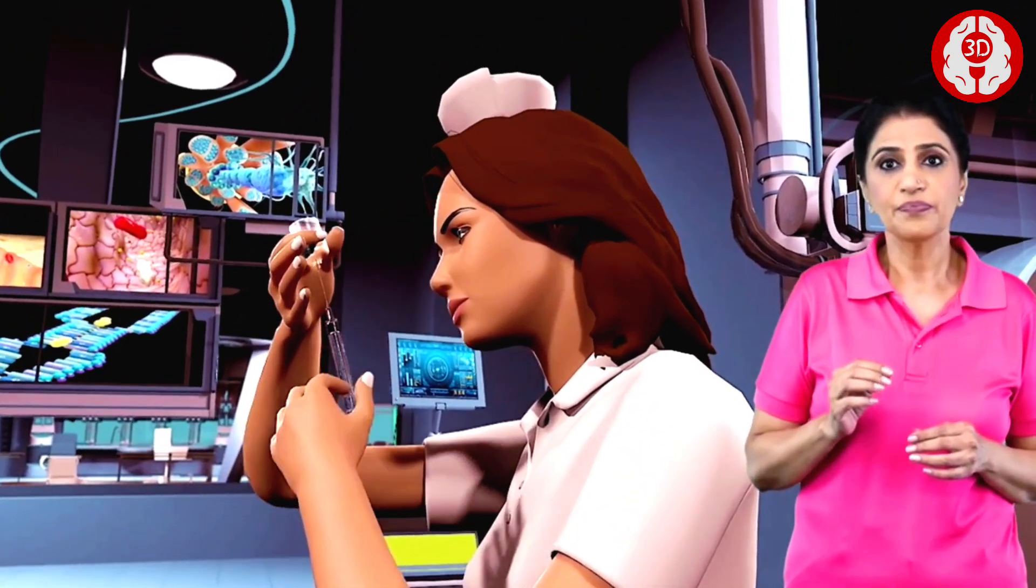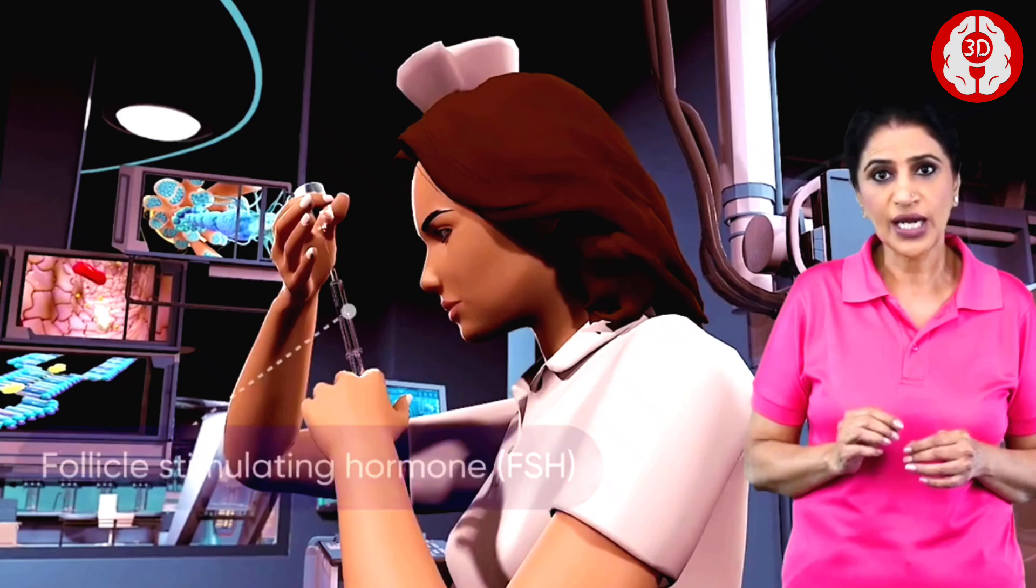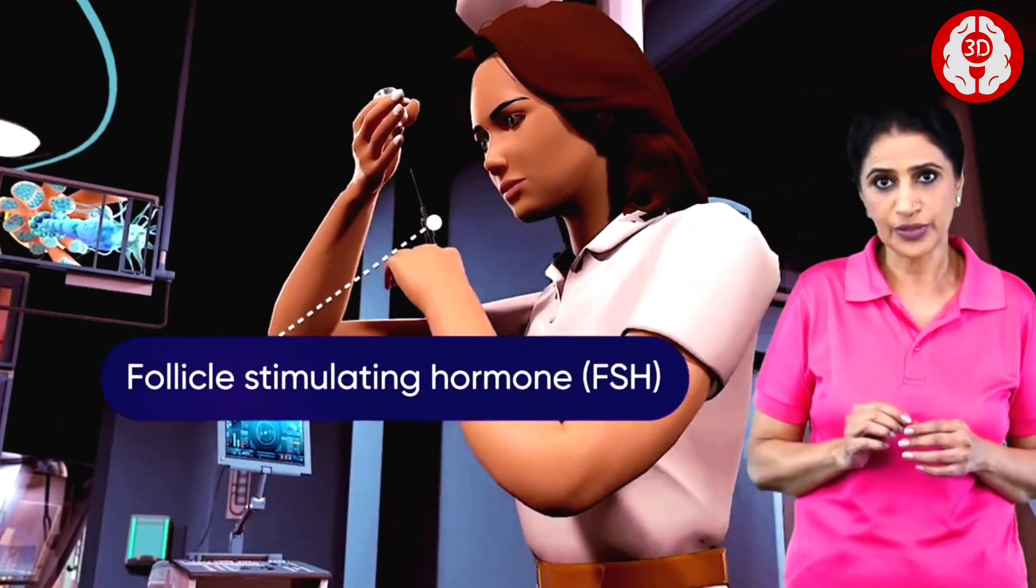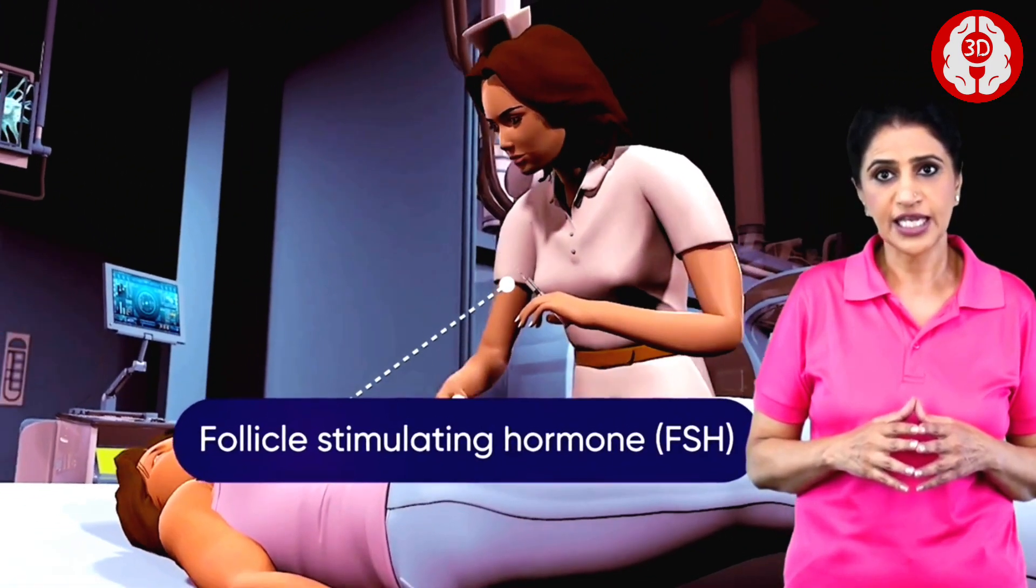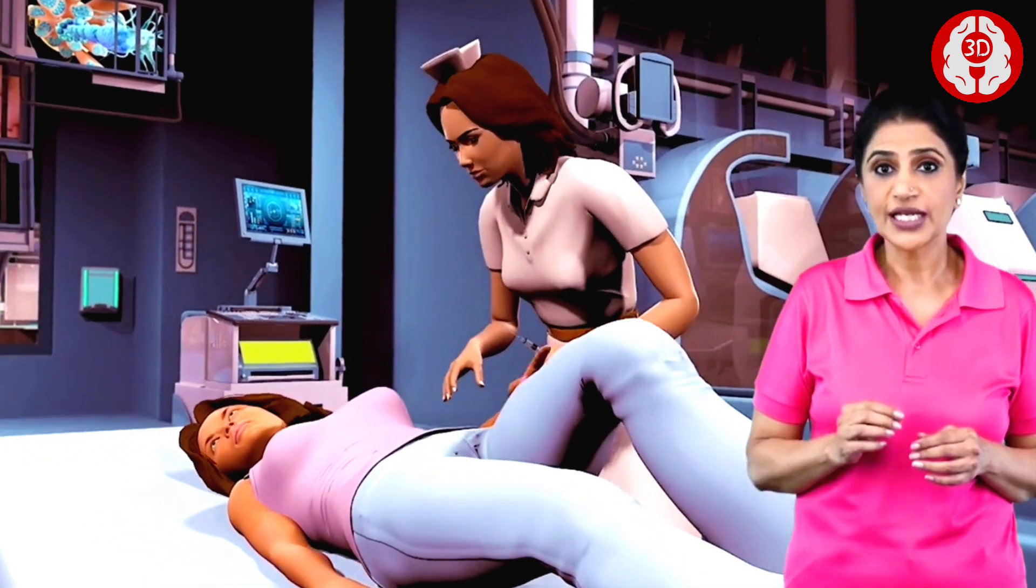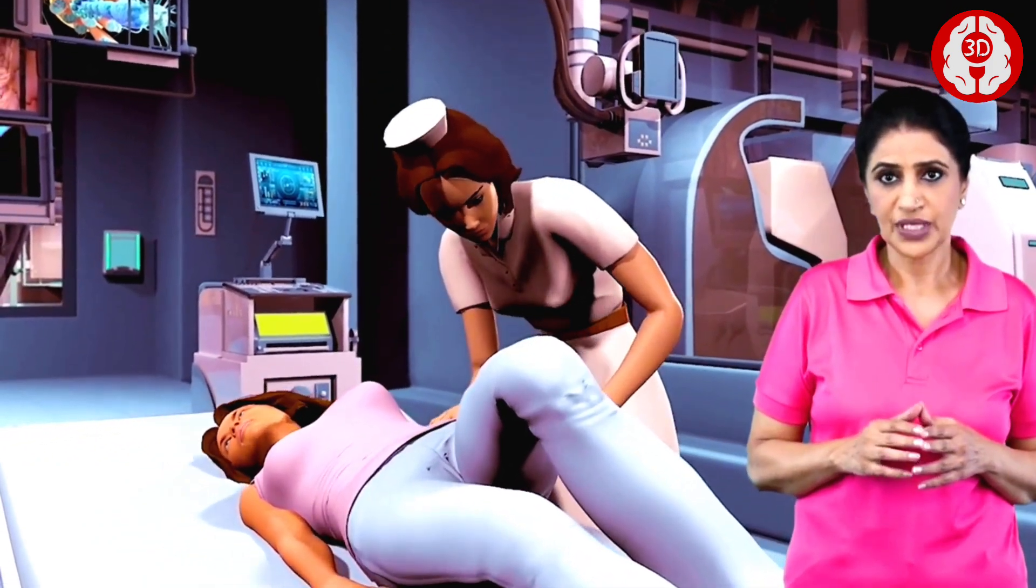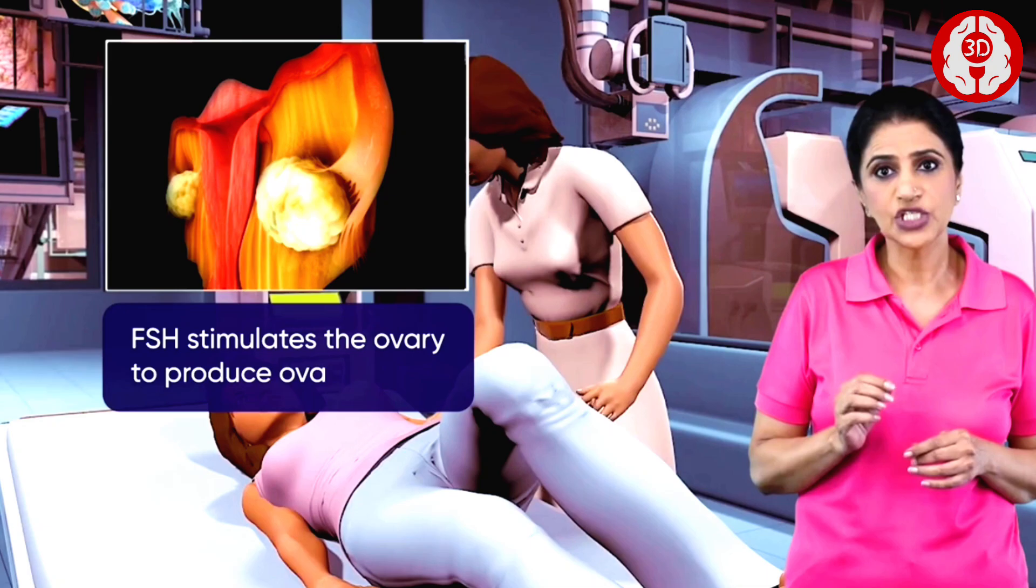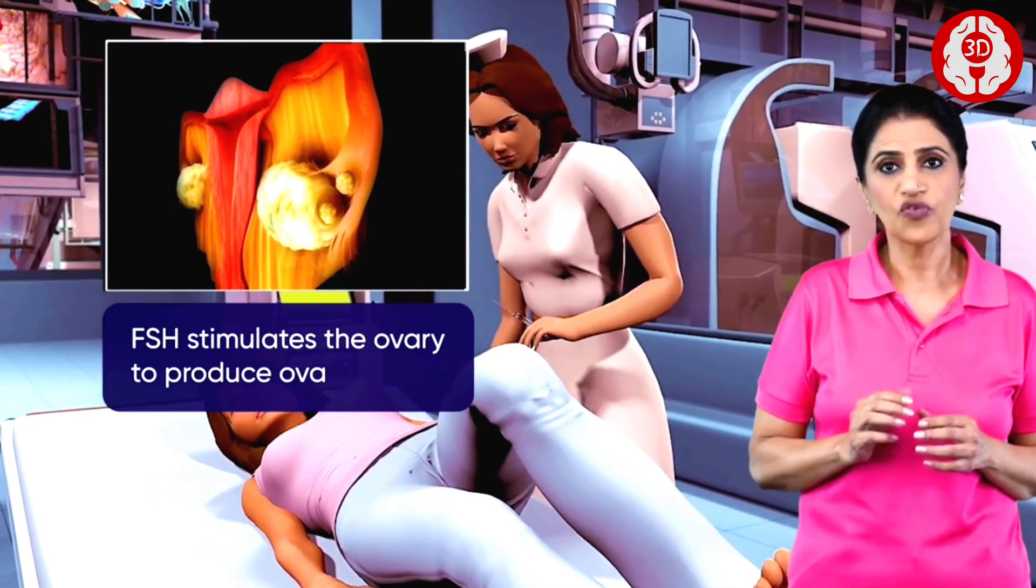This technique begins with the fertility drug containing follicle stimulating hormone, FSH, that is injected in a female. The FSH stimulates the ovary to produce ova.